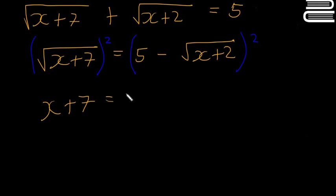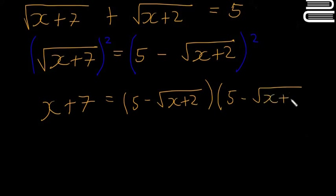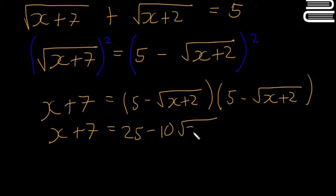So this squared is going to give us x plus seven. This one here, I'm going to write this out twice. It's going to be five minus the square root of x plus two times five minus square root of x plus two. Then x plus seven is going to be equal to this. So it's going to be 25 minus 10 square root of x plus two, and then this squared is going to be plus x plus two, because that's what's inside the square root and minus by minus is going to give us plus.